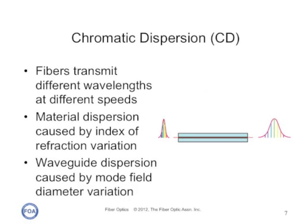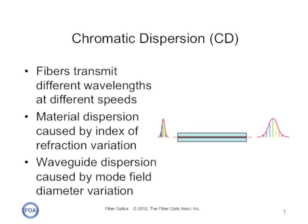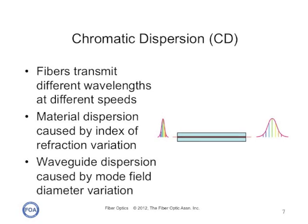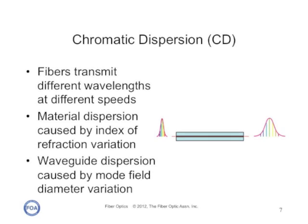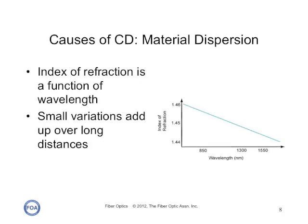Chromatic dispersion is when glass optical fibers transmit signals of different wavelengths at different speeds. As you can see in the two pulses, the fact that the redder light travels faster than the blue light causes the pulse to widen as it goes down the fiber. There are two causes of this: material dispersion, caused by the index of refraction of the glass, and waveguide dispersion, caused by mode field diameter variation with wavelength. The variation of the index of refraction over the entire spectrum covered by fiber optics may seem small — only a few percent — but when dealing with very high speed pulses over very long distances, it can add up.